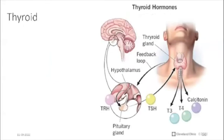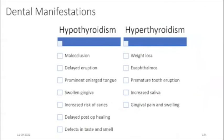The thyroid gland produces two hormones: calcitonin and thyroxine. Calcitonin is a minor hormone in bone metabolism which works opposite to parathyroid hormone and decreases serum calcium levels. Calcitonin therapy has been reported to be useful for osteoporosis and giant cell granulomas of the jaw. The dental manifestations due to thyroid conditions include both hyperthyroidism and hypothyroidism. In hypothyroidism, features include malocclusion, delayed eruption, prominent enlarged tongue, swollen gingiva, increased risk of caries, and delayed post-operative healing with defects in taste and smell.